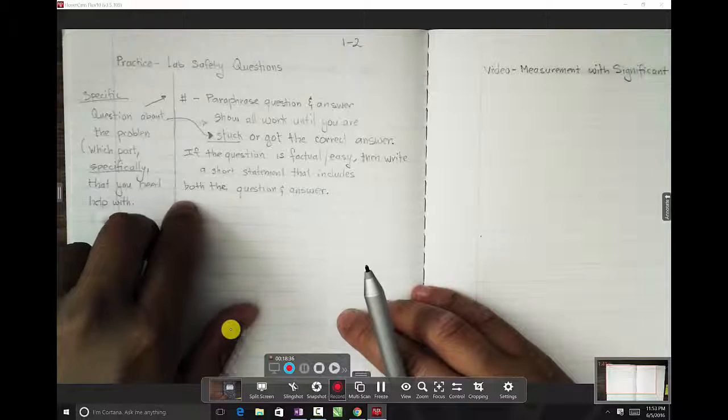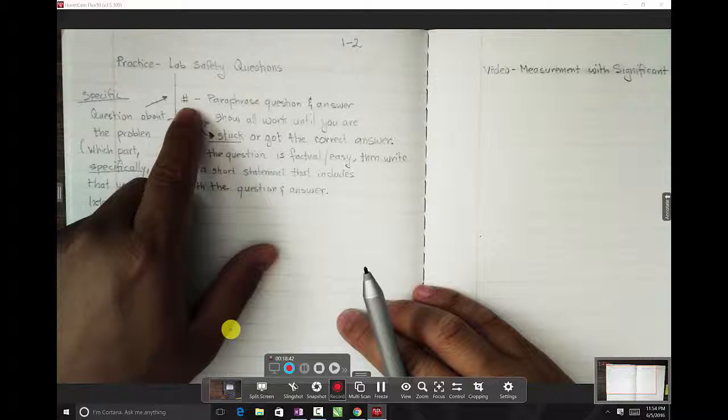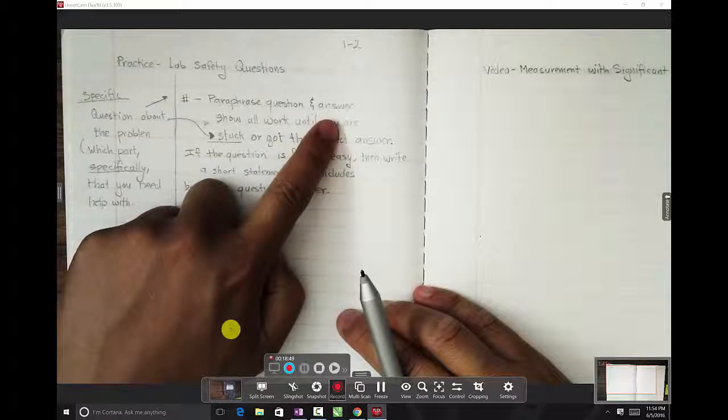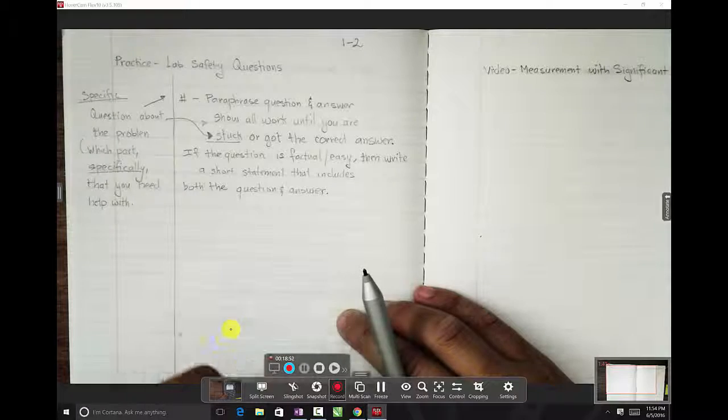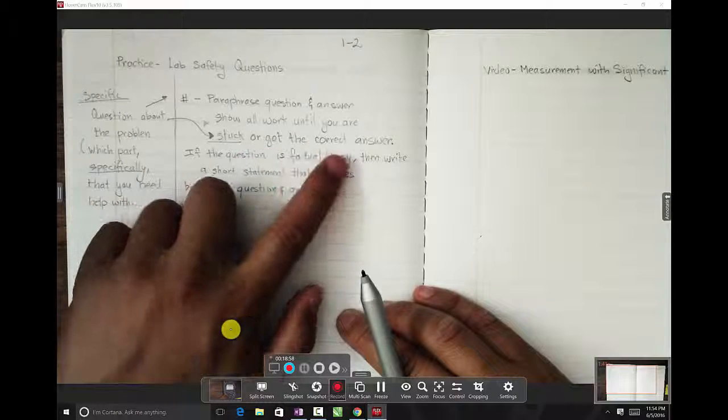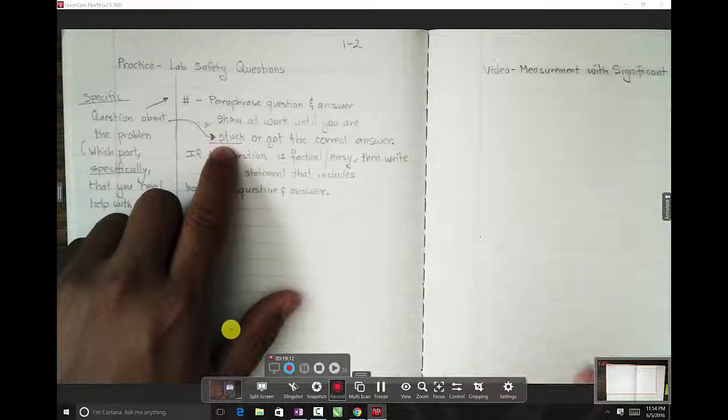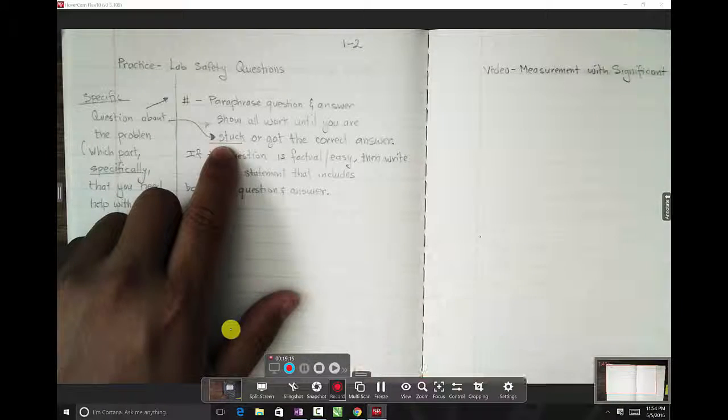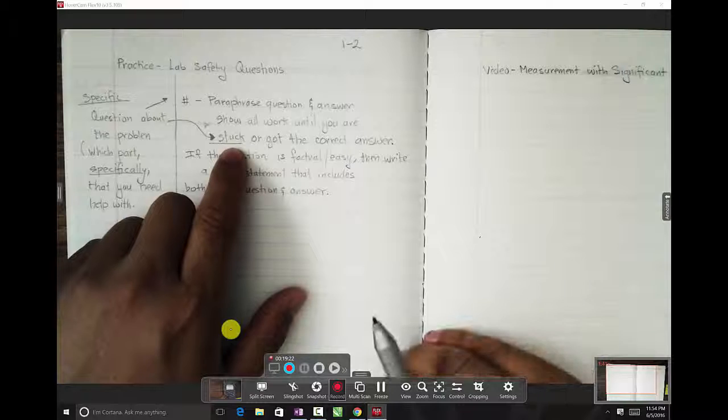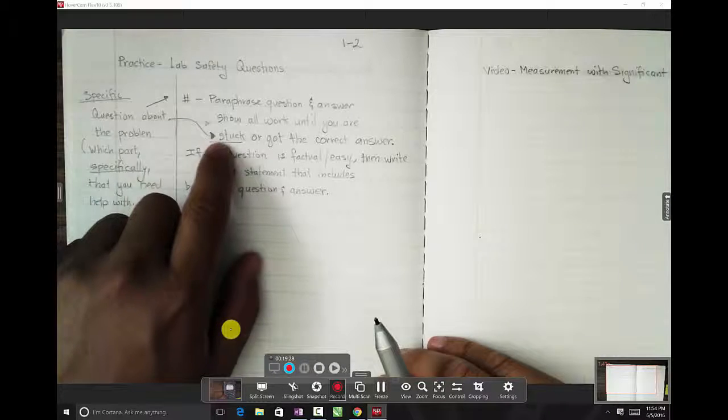That is, the narrow column and the wider column. On the wider column, you are going to have a number, the question number. And then you are going to paraphrase the question and the answer. Now, if the question requires an extensive amount of work, you are going to show all your work until you are stuck or until you got the correct answer. What do I mean you are stuck or struggled? That is, in most cases, if you are learning the content for the first time and you don't know how to do it, I want you to show all your work until you are struggling to the point you cannot move on. And that's why we move over here.